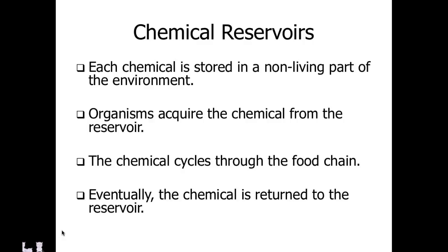For these chemical reservoirs, each chemical is going to be stored initially in some non-living part of the environment — within the atmosphere, within the rocks, within dirt prior to its becoming soil, or even within soil once it has organic content. Organisms are going to require chemicals from one or all of these reservoirs. Chemicals can be cycled through a food chain as an organism consumes them from the chemical reservoir, and then dies and decomposes — the decomposers and detritivores are going to return those nutrients back into the soil so they can once again be taken up by plants and animals.